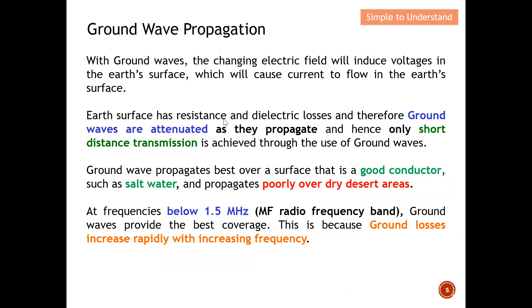The earth's surface has resistance and dielectric loss, and therefore ground waves are attenuated as they propagate. The signal becomes smaller and smaller, and hence only short-distance transmission is achieved through the use of ground wave.